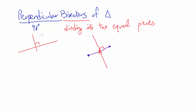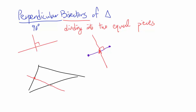Let's consider any triangle — let's draw some random triangle. And let's try to draw out perpendicular bisectors of each side. For this side it's going to go like this, for this one like this, and for this one like this. And it looks like, to some extent, they intersect at one point.